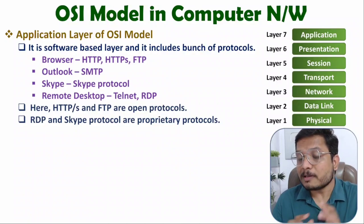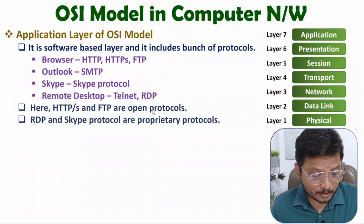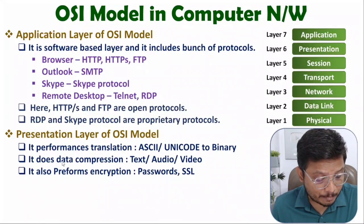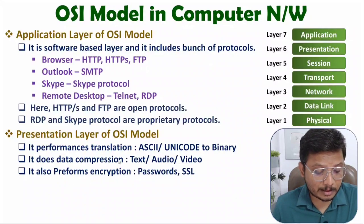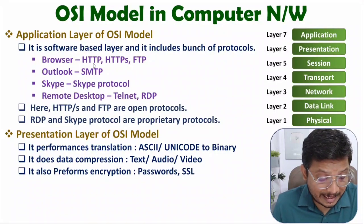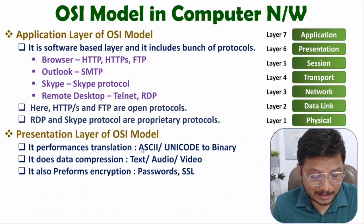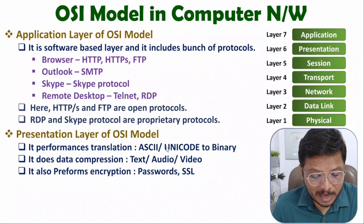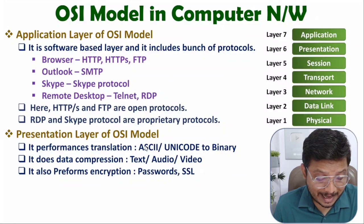The second layer is the presentation layer. It performs three things: translation, data compression, and encryption. Translation means whatever we write in the web browser — in ASCII for English, or Unicode for other languages like Hindi, Gujarati, or Italian — those characters get converted into binary first.